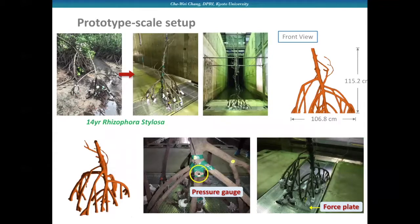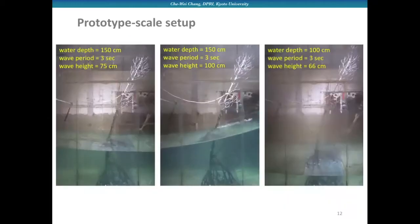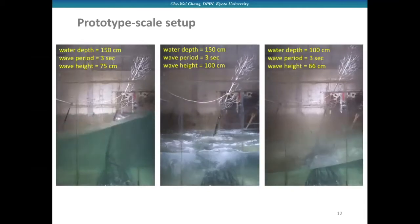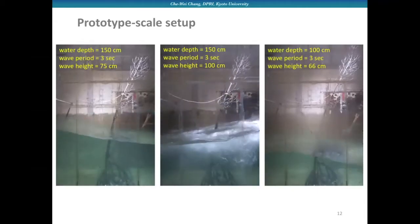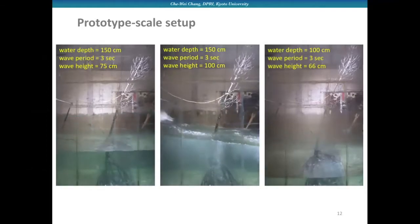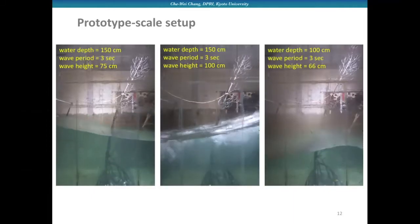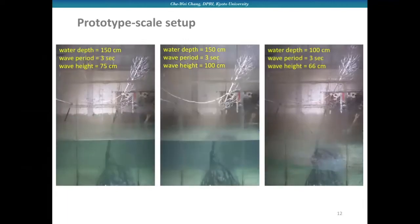As you can see, we shipped the real tree from the fields back to the lab. This is the 3D scan image to give you an impression how complicated the prop roots can be. We also use pressure gauges and force transducers to measure wave forces exerted on the mangrove tree. Here are some videos showing how regular waves interact with the real trees under three different incident conditions, even with breaking waves. The real mangrove trees were flexible and not rigid, which should be taken into account in our analysis.